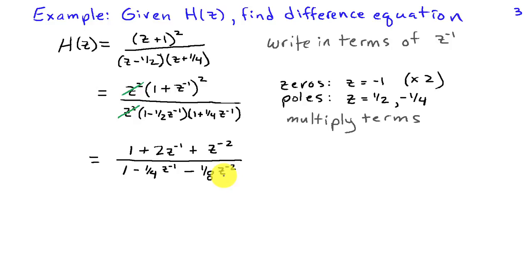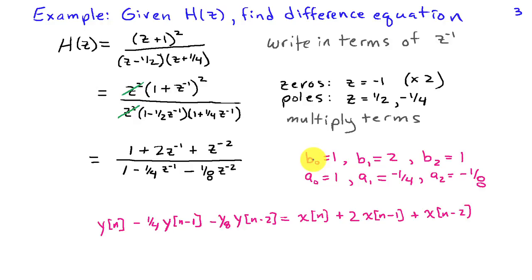So from this, we can identify our coefficients of our difference equation. In particular, we see that b0 is 1, b1 is 2, b2 is the coefficient of z to the minus 2, and that's 1. And then a0 is 1, a1 is minus 1 fourth, a2 is minus 1 eighth. So using these coefficients,